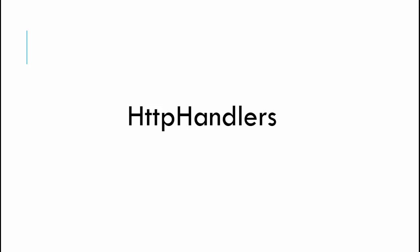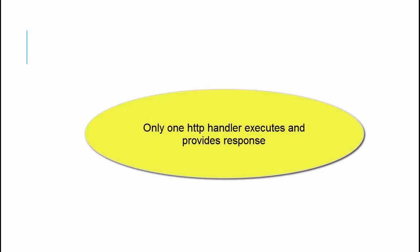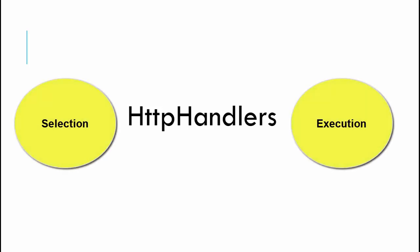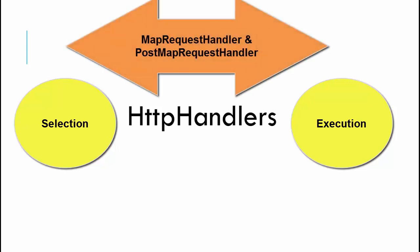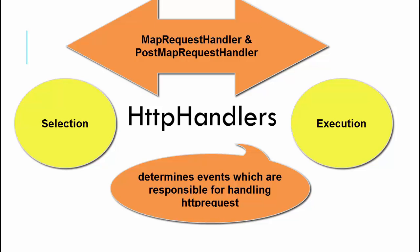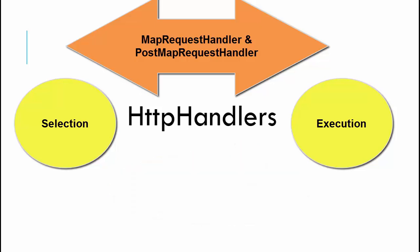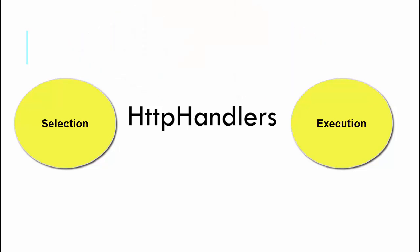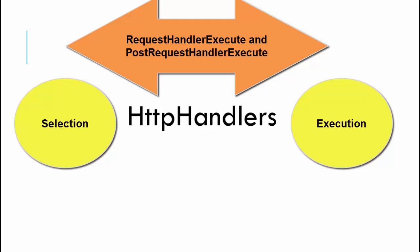There could be HTTP handler reassignment in the lifecycle of a request, but as far as ASP.NET MVC is concerned, only one HTTP handler executes and provides the response. As far as HTTP handlers are concerned, there are two phases that happen: the first phase is the selection and the second phase is the execution. The MapRequestHandler and PostMapRequestHandler events in the lifecycle determine the HTTP handler responsible for executing the request. For execution, we have RequestHandlerExecute and PostRequestHandlerExecute, which help execute the HTTP handlers determined earlier in the request cycle.